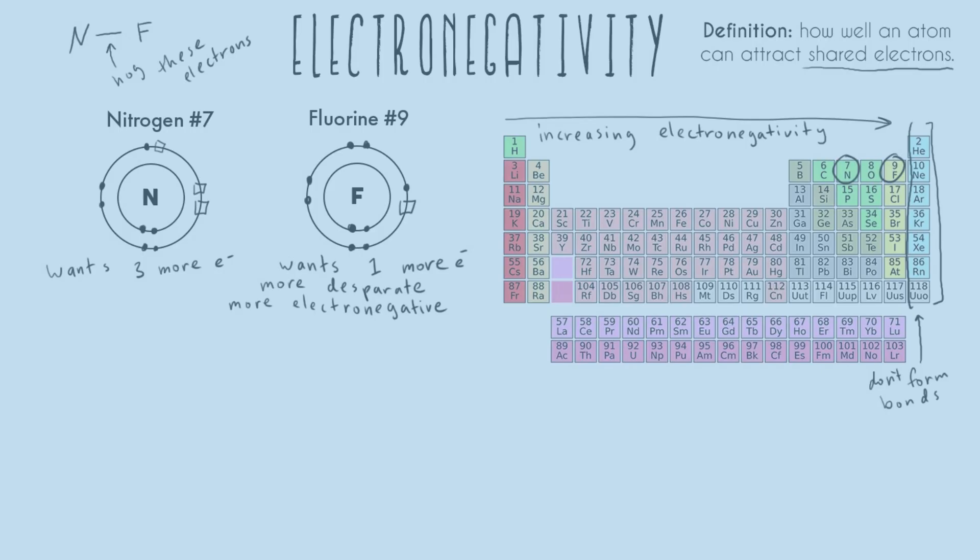So that unlocks one trend. Now, left to right, we understand that we're going to be increasing, increasing, increasing electronegativity, except for the noble gases, which aren't going to form bonds. They're not going to be electronegative. But what about top to bottom?